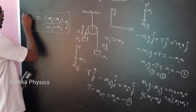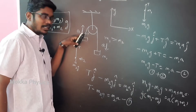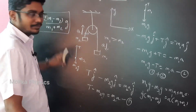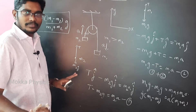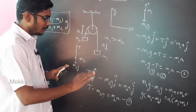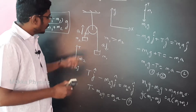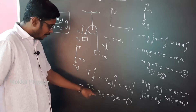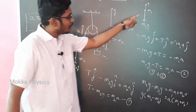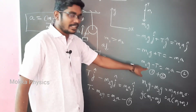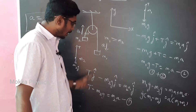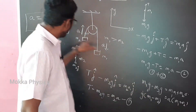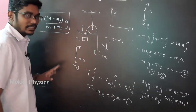For the two blocks, we can find a common acceleration. For the first block, draw a free body diagram — one equation. For the second block, draw a free body diagram — one equation. If we add the two equations, we will find the common acceleration.